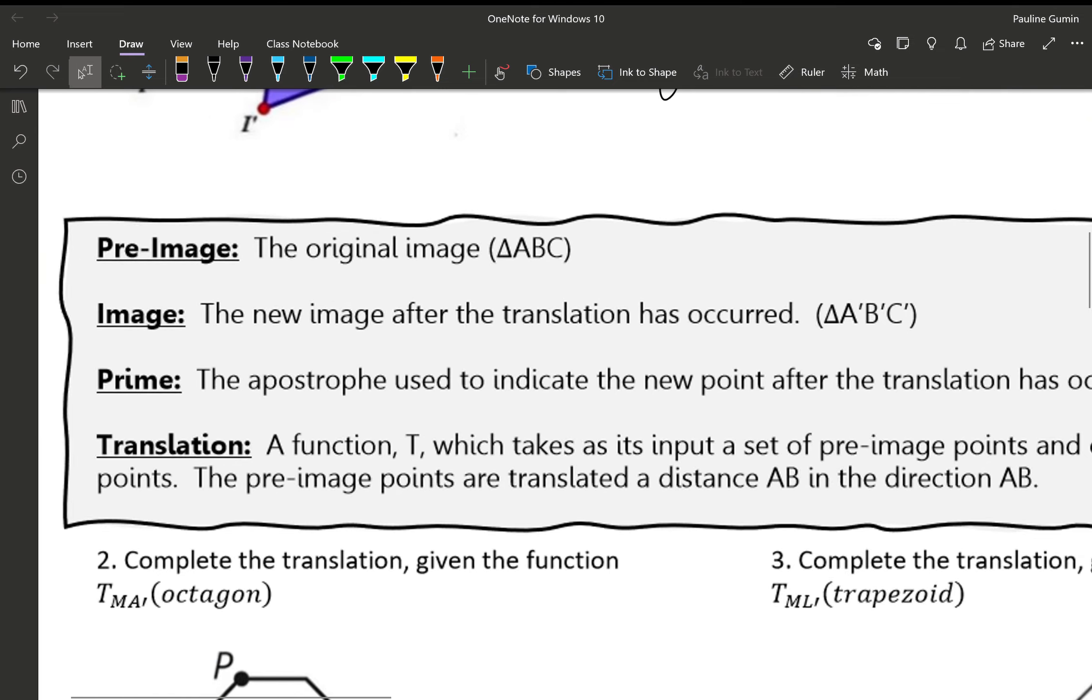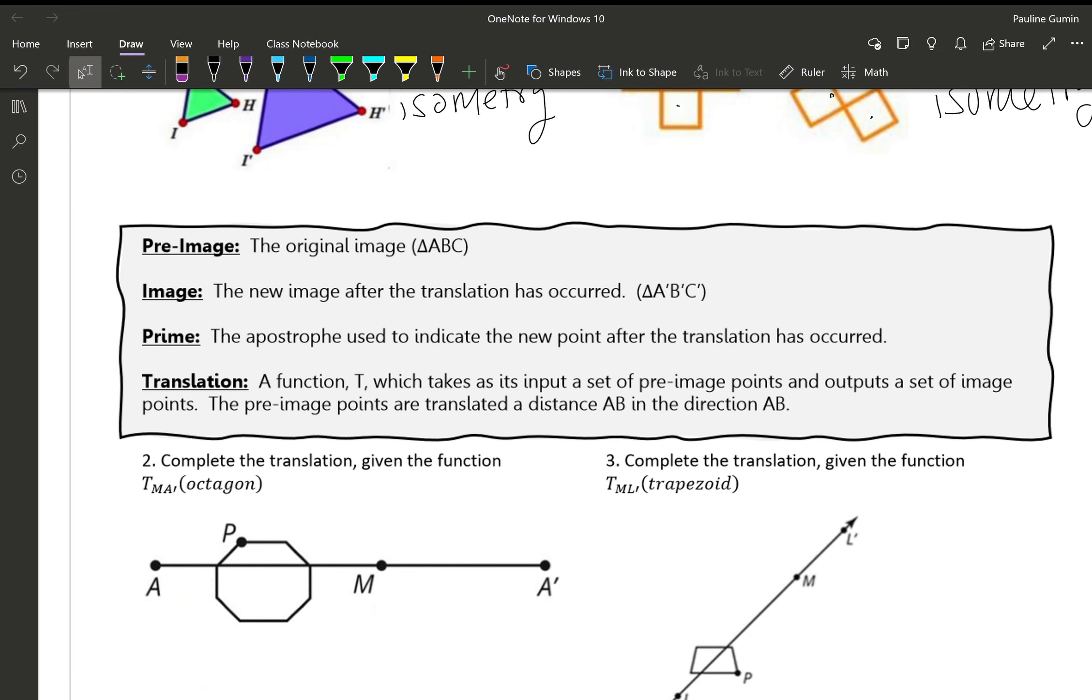Okay next we have this vocabulary: image, pre-image, prime, and translation. Now a pre-image is the original image, the image we start with. Image is the new image.